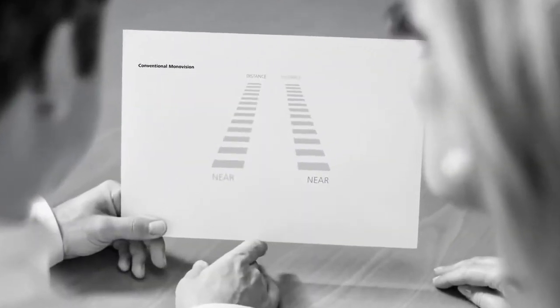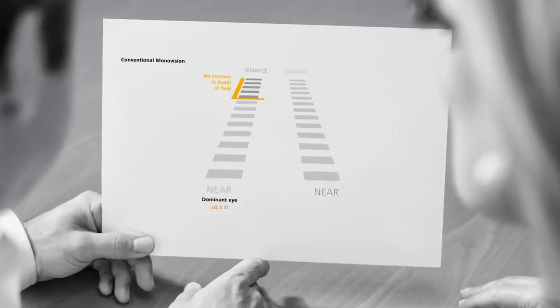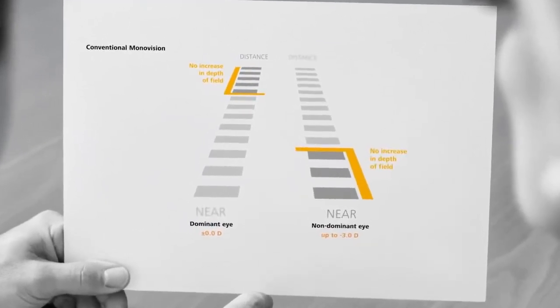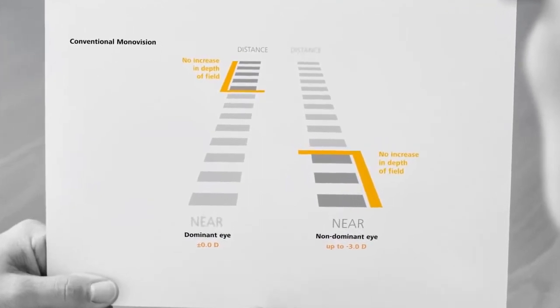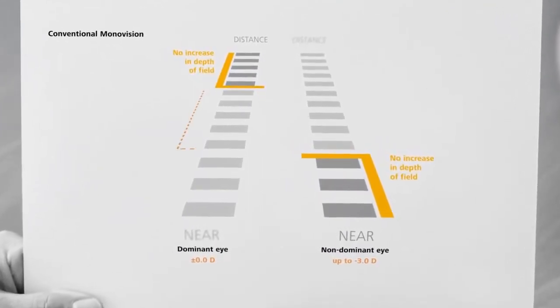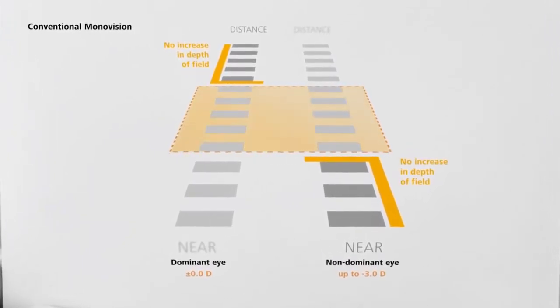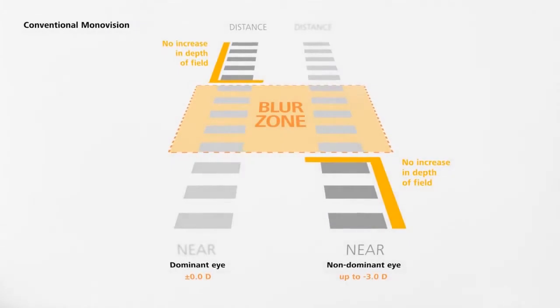With conventional monovision, the dominant eye is corrected for distance vision to almost plano. The non-dominant eye is usually corrected for near vision by up to minus three diopter. Not all patients can compensate the different levels of correction. Many experience a blur zone in the intermediate range.